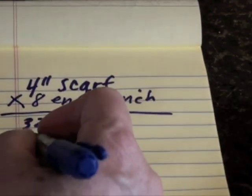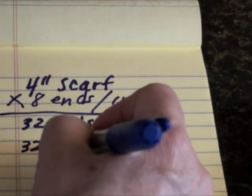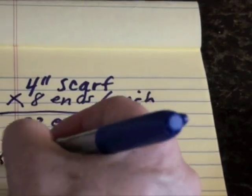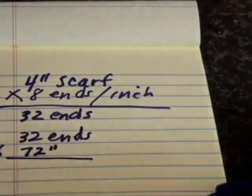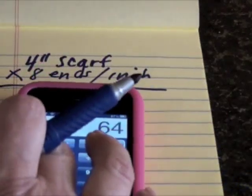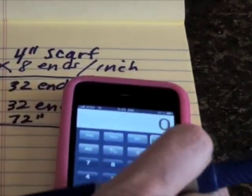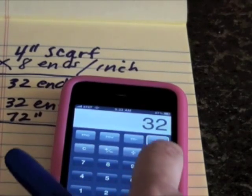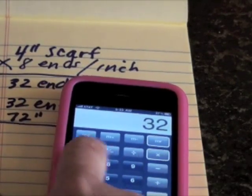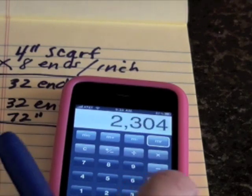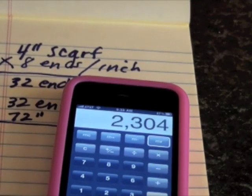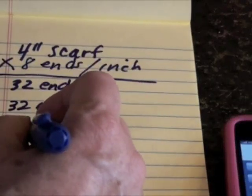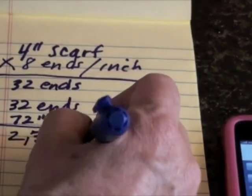To do that, I will take 32 ends and multiply that times 72 inches. I would get out my calculator and multiply 32 ends times 72 inches. And that gives me 2,304 inches.